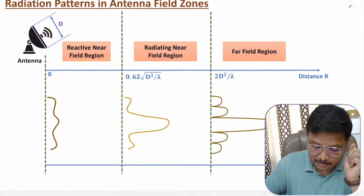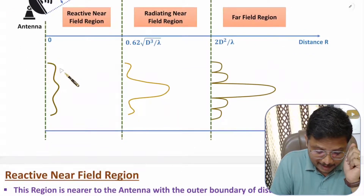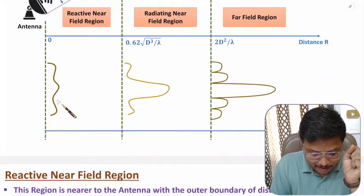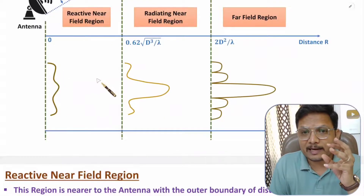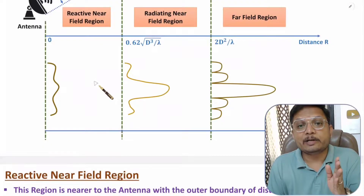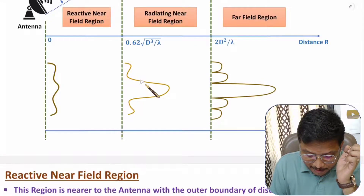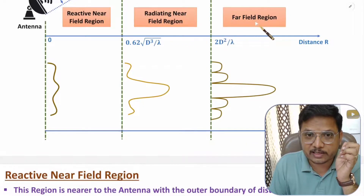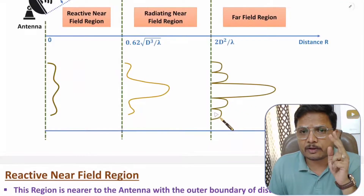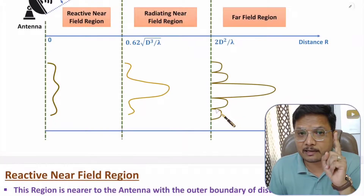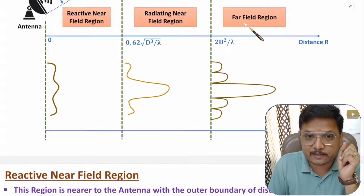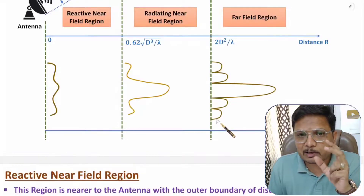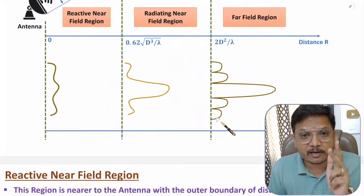Observing radiation characteristics: nearer to the antenna there is no proper radiation pattern, so randomness is there. As you move far from the antenna, the radiation pattern begins to form. In the radiating near field region a somewhat-formed radiation pattern can be observed. In the far field region a proper radiation pattern exists, where you can clearly observe the major lobe and minor lobes. Radiation pattern measurements should be taken at distances greater than 2d²/λ.